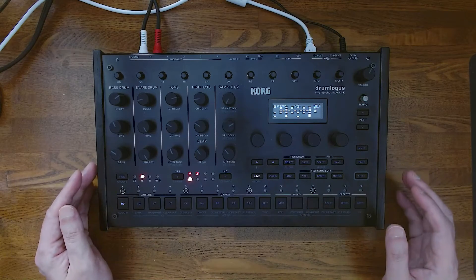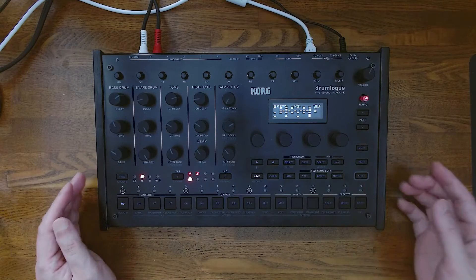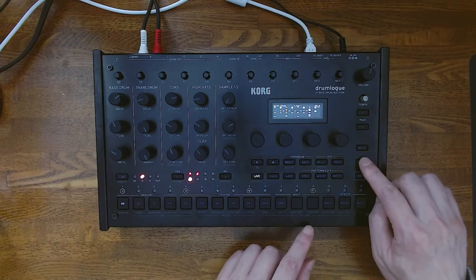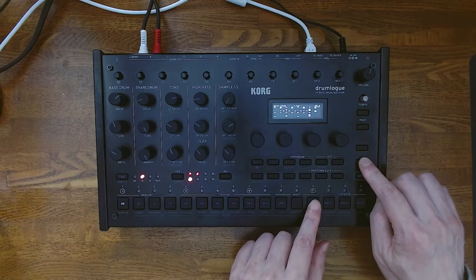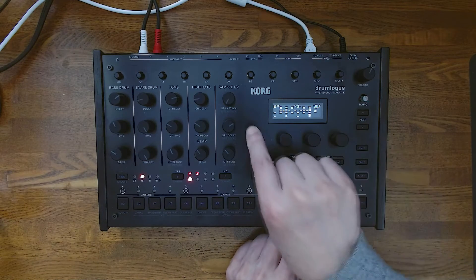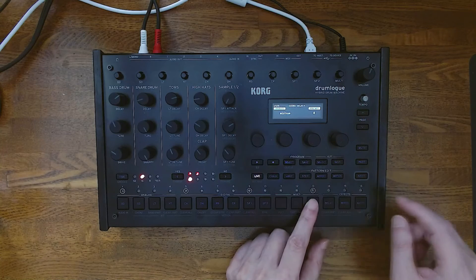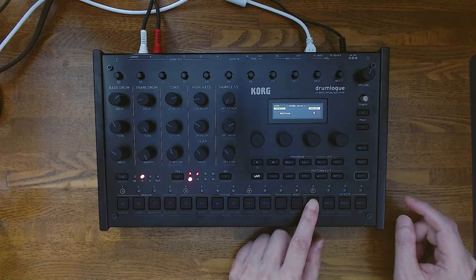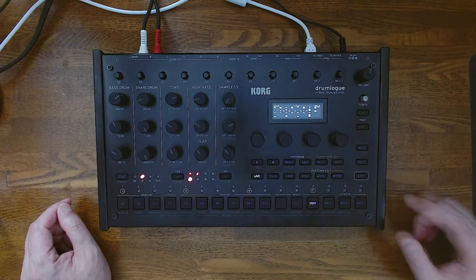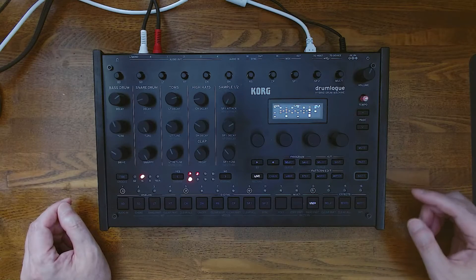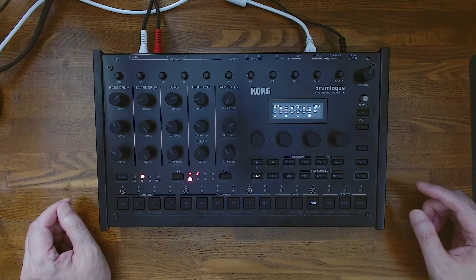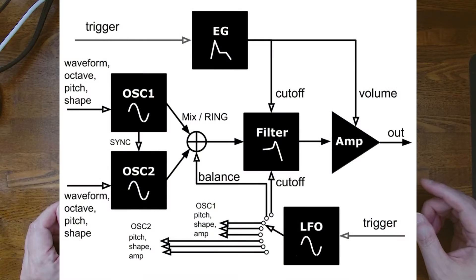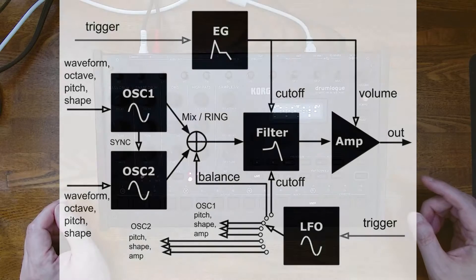Now you can select the installed module from the menu in the user sound button. Minitone is a classical virtual analog synthesizer. It's a monophonic synthesizer with two oscillators, one low pass filter, one envelope generator, and one LFO.